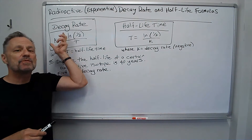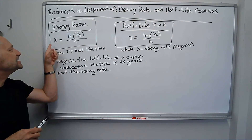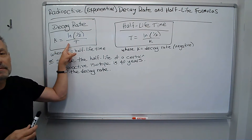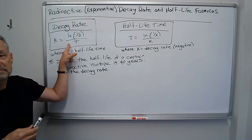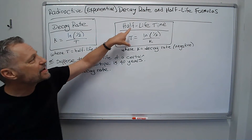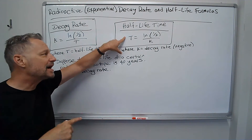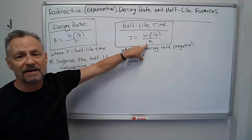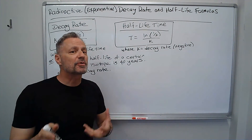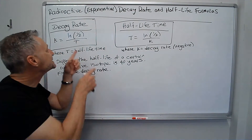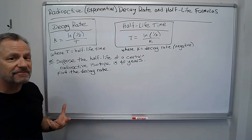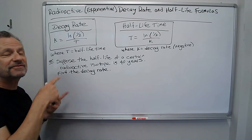The decay rate is just k. The decay rate is ln of a half divided by t. That's it, simple as that. And if we multiply by t and divide by k, we get the half-life time as t equals ln of a half divided by k. Simple as that — easy formulas to remember, especially since a lot of times they tell you what the half-life is and we have to find the rate of decay.